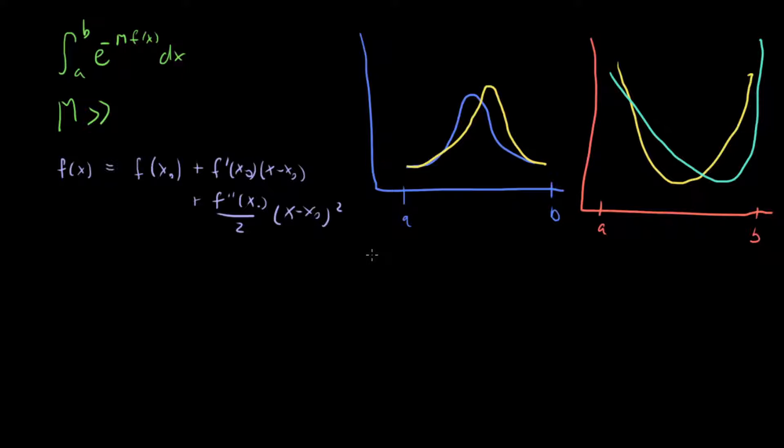What should we be centering about? If you want to do a Gaussian integral, then it makes sense to center it around the peak. So let's set this x₀ equal to the global minimum of the function. If we do that, then the first derivative is going to be zero, so this term drops out and we're just left with the zeroth order term and the second order term.